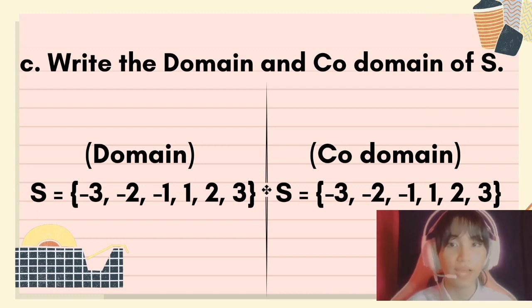For the codomain, the same as the values under the domain: negative 3, negative 2, negative 1, 1, 2, and 3.